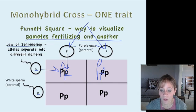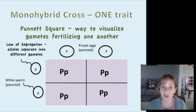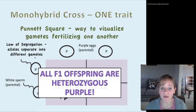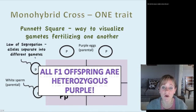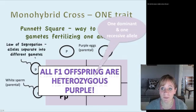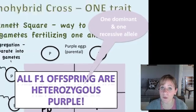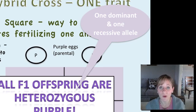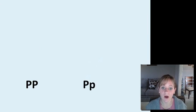This Punnett square shows us how we get that F1 generation. The F1 generation are all heterozygous purple. Heterozygous simply means the organism has one big P and one little p — one dominant and one recessive allele.